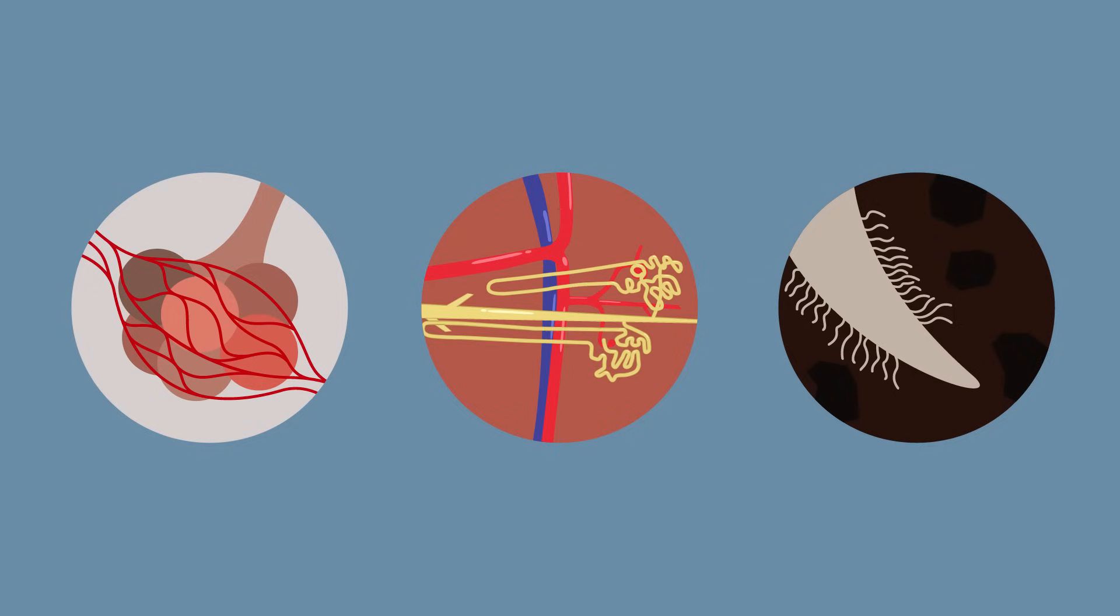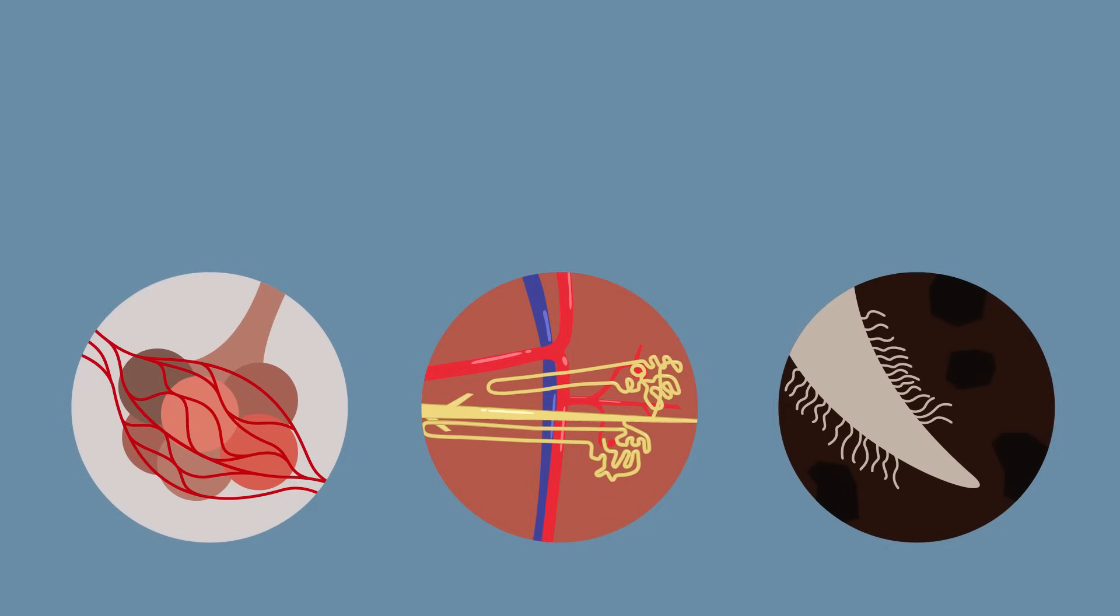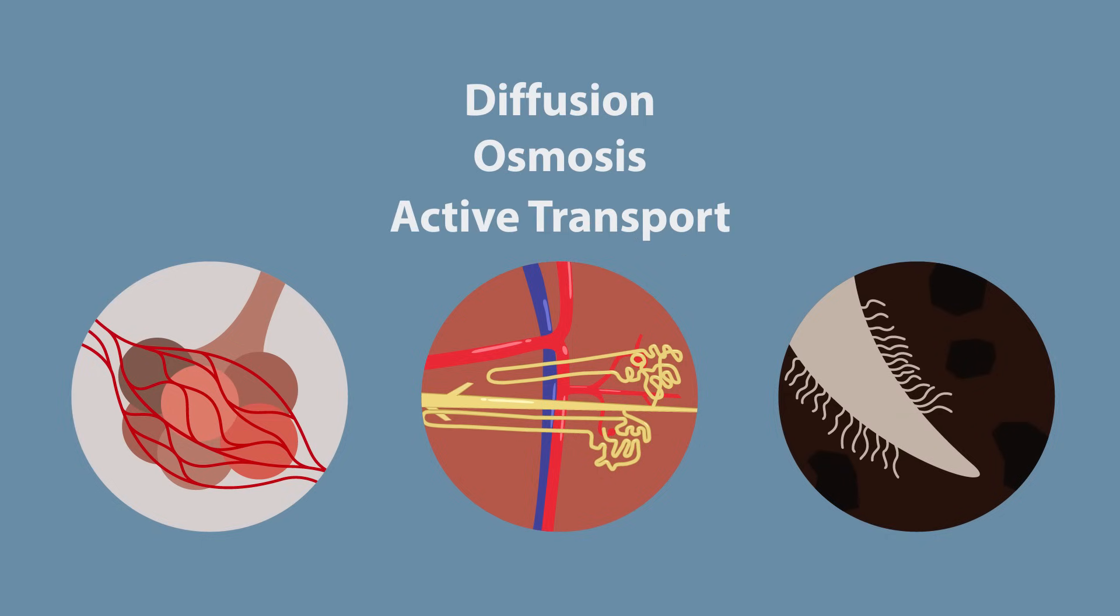Depending upon what is being exchanged and which direction along the concentration gradient things are traveling will determine whether diffusion, osmosis, or active transport will be used.